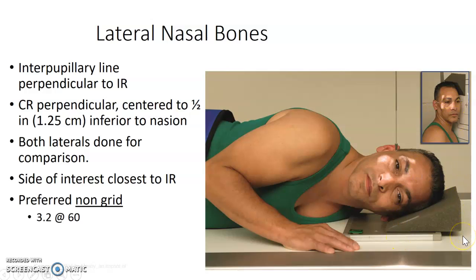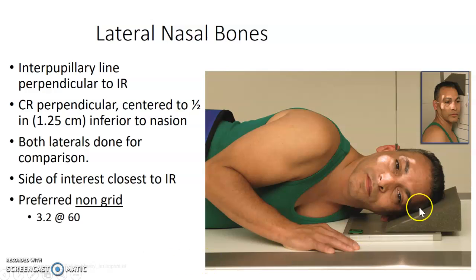One thing you want to try and do is expose nasal bones on non-grid. A lot of our wall buckies — the grids will come out. You can just take the grid out and have them standing upright and reduce your technique, or they can be laying down like in this image here where he's got just the cassette underneath him. The interpupillary line should be perpendicular, centered half inch inferior to the nasion.